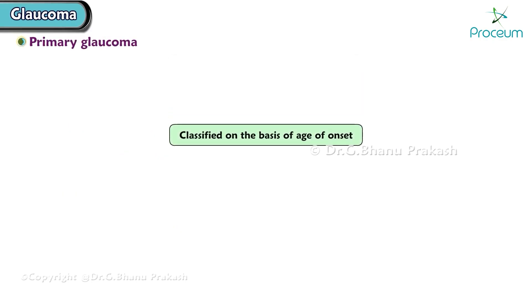Primary glaucoma is classified on the basis of age of onset as primary congenital glaucoma and primary adult glaucoma.